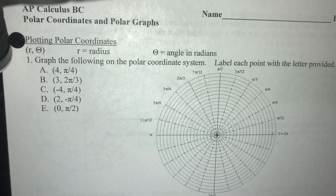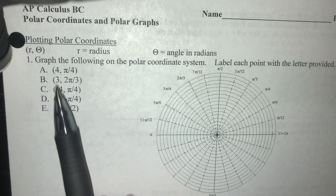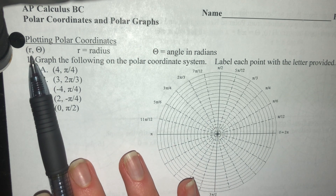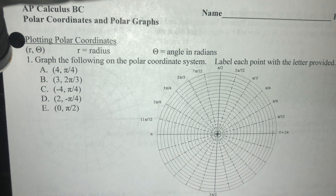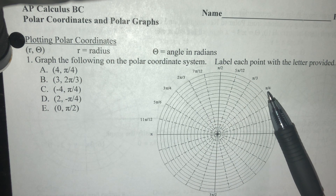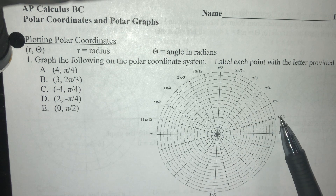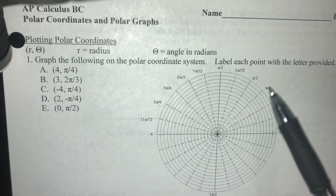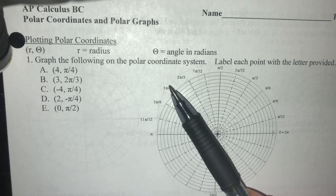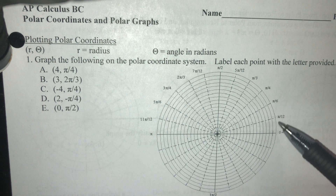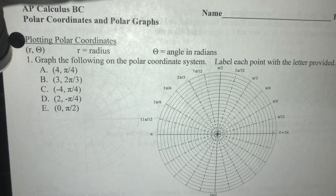Let's get started. To begin, we're going to plot some polar coordinates. In the polar coordinate system, the first coordinate is r — that's your radius — and the second one is theta — that's your angle in radians. On this polar graph, the radian angles are marked off: pi over 4 is a 45-degree angle, pi over 2 is a 90-degree angle, 3 pi over 4, pi, and so on. We've also got pi over 6, pi over 3 — all your familiar unit circle angles.